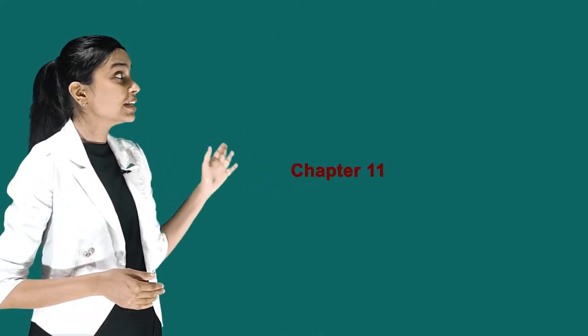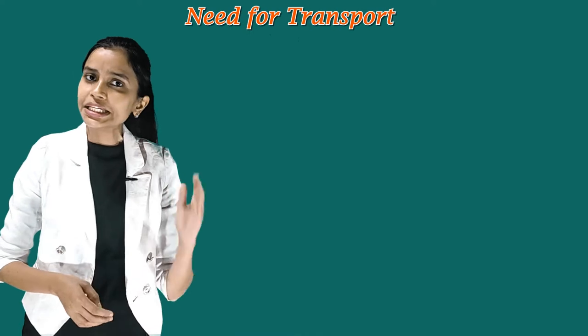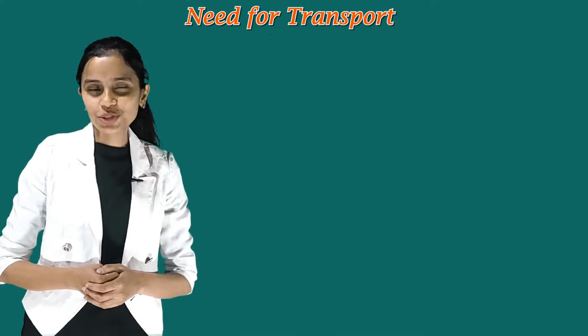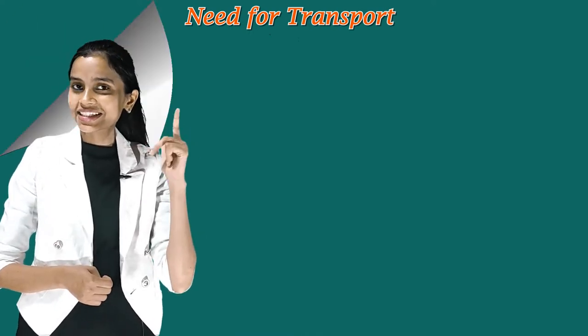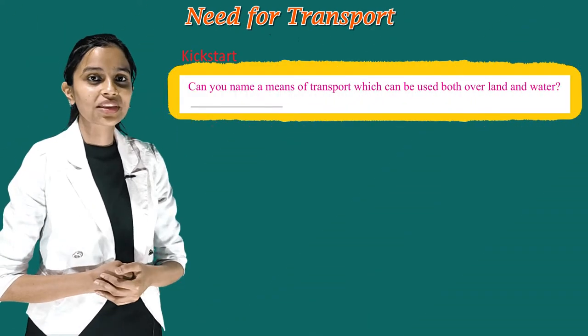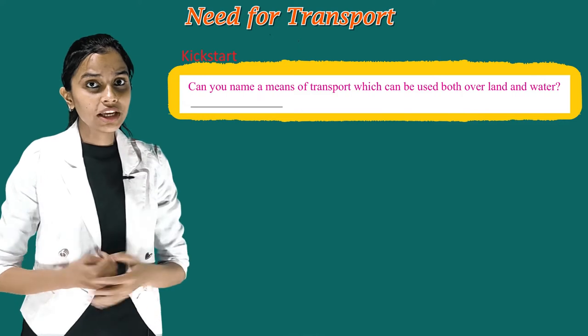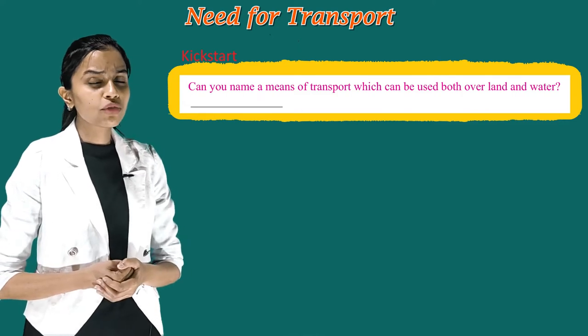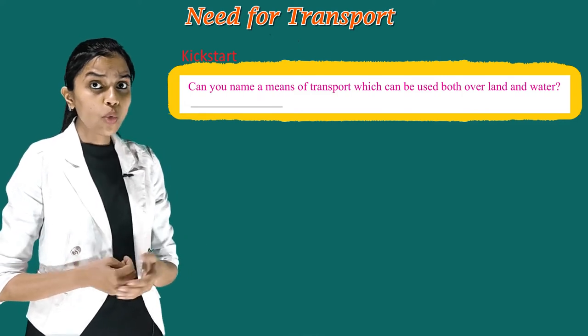Hello students, my name is Priyanka and I'm your digital mentor. Today I'm here to start with Chapter 11, that is 'Need for Transport'. So let's kick start — can you name a means of transport which can be used both over land and water?